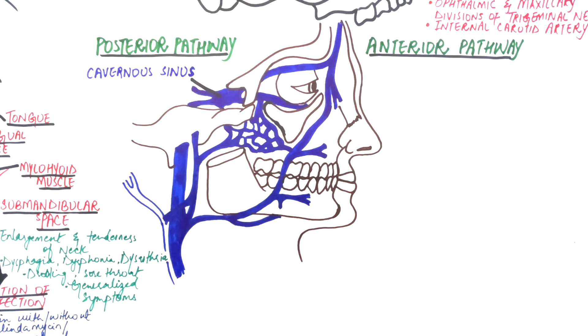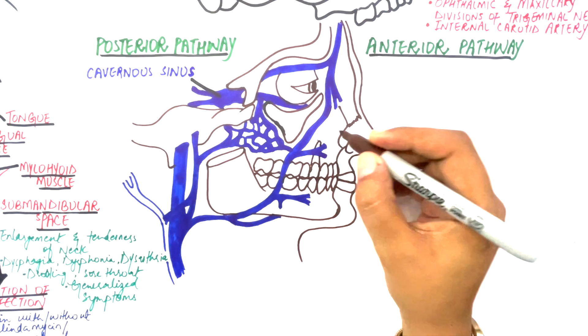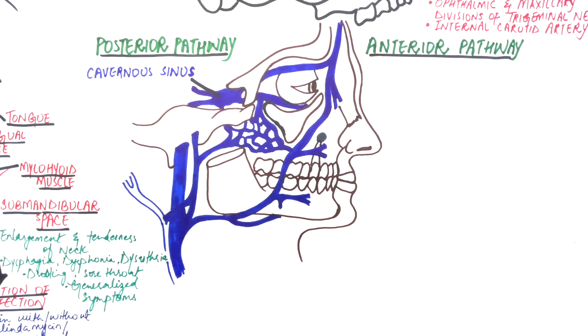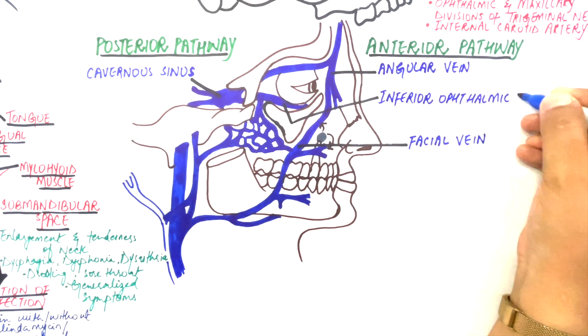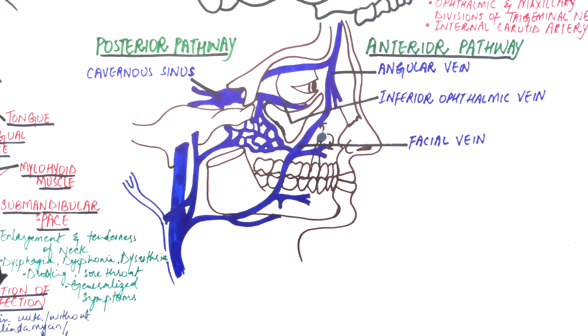Anterior pathway involves infection from the maxillary anterior teeth that perforates the facial surface of the maxillary bone and spreads to the canine space where facial veins are located. This results in a septic thrombus formation in the valveless facial vein. Since these veins do not have any valves, infection from these veins can travel in a retrograde flow to the angular and to the inferior ophthalmic vein, hence reaching the cavernous sinus and resulting in cavernous sinus thrombosis.